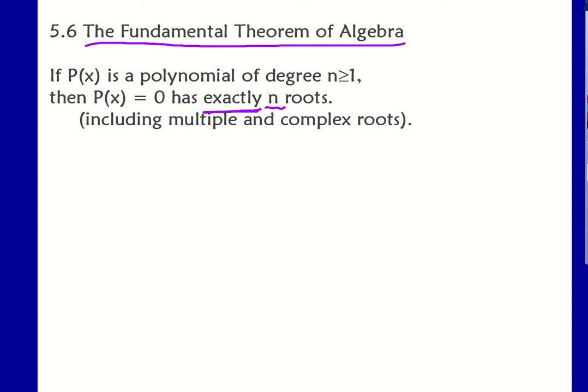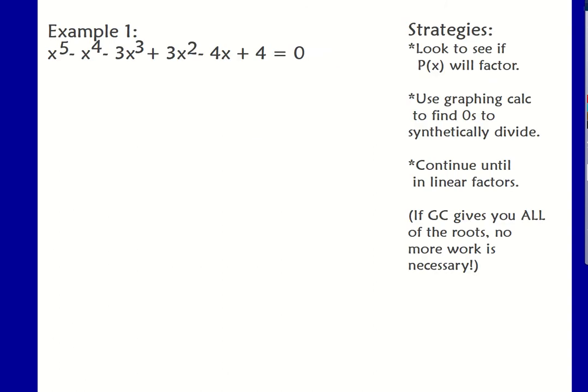We're going to look at two or three examples, and we're just going to be continuing what we were doing in Section 4.5. Here's your first example: x to the fifth minus x to the fourth minus 3x cubed plus 3x squared minus 4x plus 4 equals 0. We want to find all the roots. We know this is a fifth-degree polynomial, so I should have five roots. My strategies: first, if I can factor this polynomial, that's going to be easiest. If I can't, then I can use the Rational Root Theorem to set up possible rational roots and then synthetically divide. I can continue until I get all linear factors, or if I end up with an irreducible quadratic, I would have to solve that quadratic. I notice there are six terms here, so I'm going to start by factoring by grouping.